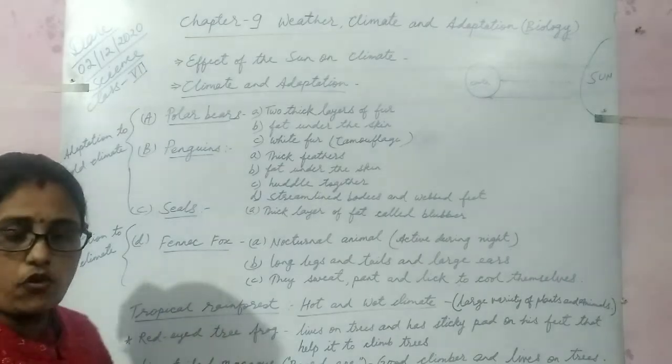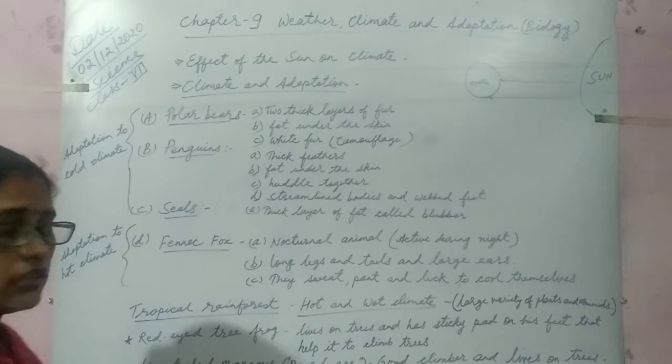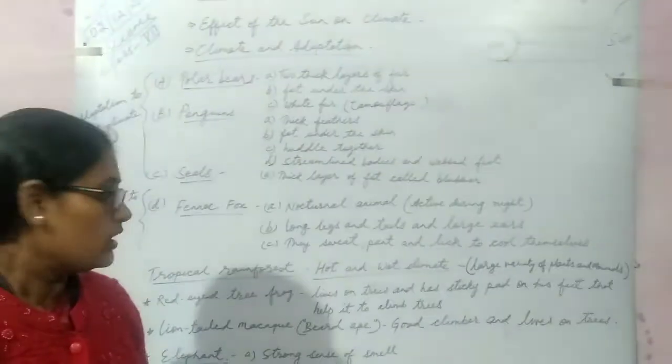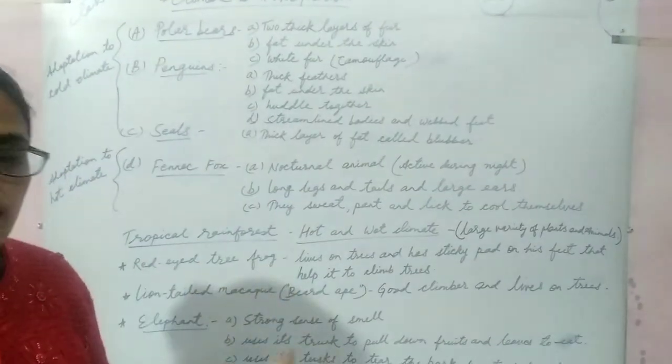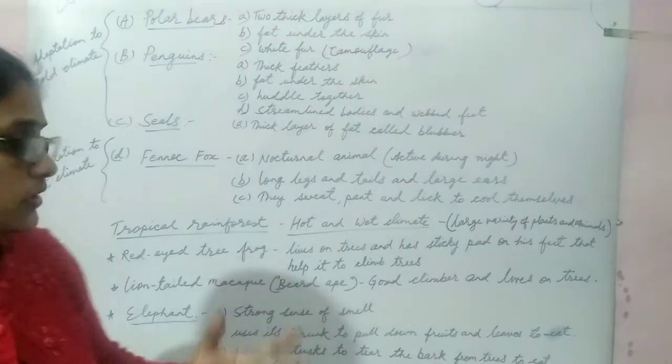Red-eyed tree frog is an animal found in the tropical rainforest. It lives on trees and has a sticky pad on its feet that helps it to climb over the trees.